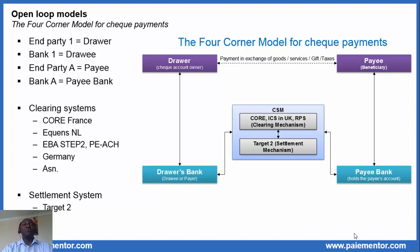The four corner model for check payments: end party one is the drawer of the check, bank one is the drawer's bank, end party A is the payee, and bank A is the payee bank or beneficiary bank. Again, drawer's bank and payee's bank are interconnected through the clearing and settlement mechanism. Clearing systems are, for example, CORE in France, LPS in Germany, the ACH in the US, and the image clearing system in the UK.